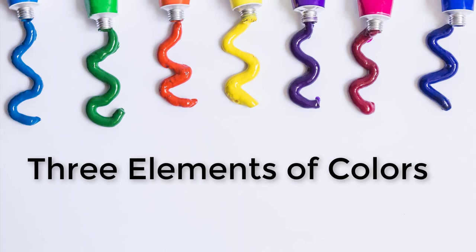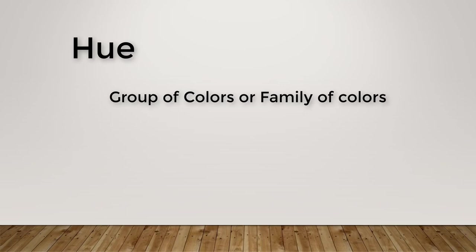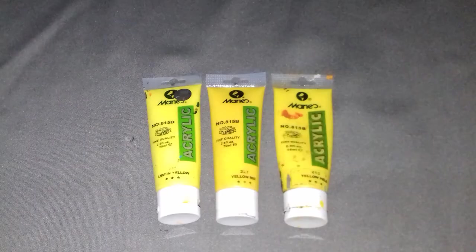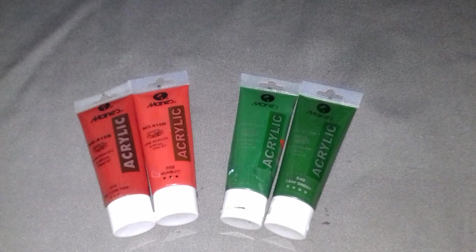3 elements of colors. First: Hue. A group of colors or family of colors is known as a hue. Here I have 3 yellows — lemon yellow, yellow pale, and yellow mid — which all belong to the same group, yellow. The same applies to red and green.